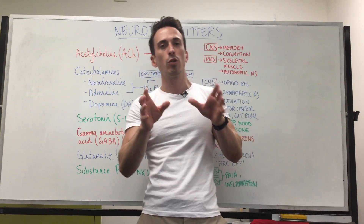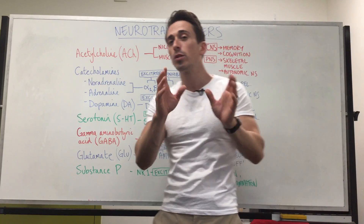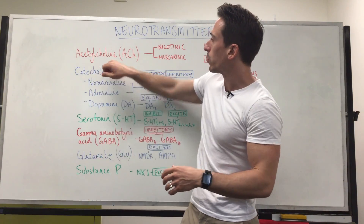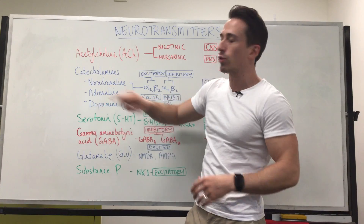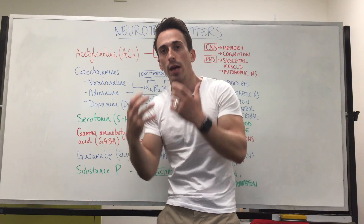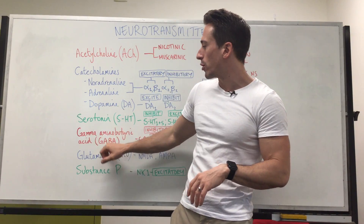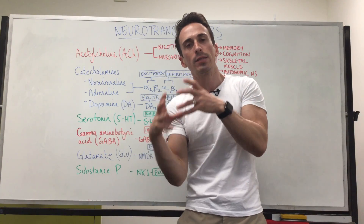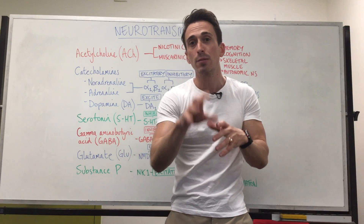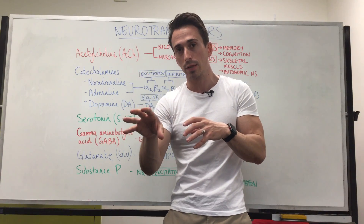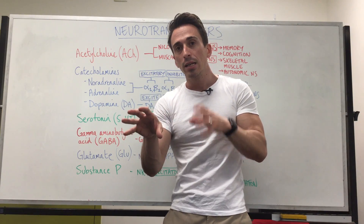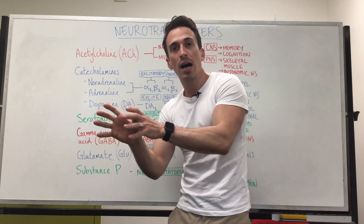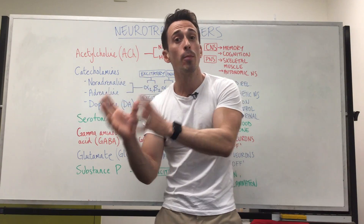There are over a hundred different types of neurotransmitters in the body. In this video we're going to go through some of the most common, including acetylcholine, noradrenaline and adrenaline (also termed norepinephrine and epinephrine), dopamine, serotonin, GABA, glutamate, and substance P. In order for these neurotransmitters to have their effect, they must bind to specific receptors, and depending on that receptor it could excite or inhibit the target organ, gland, neuron, or whatever it may be.